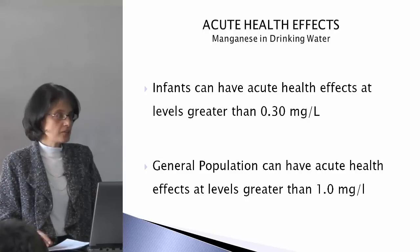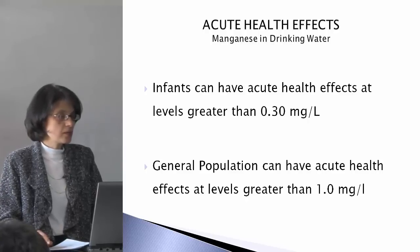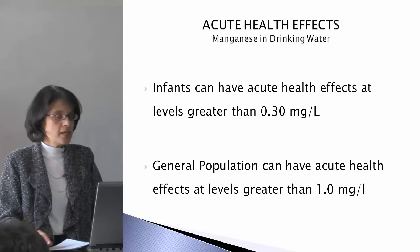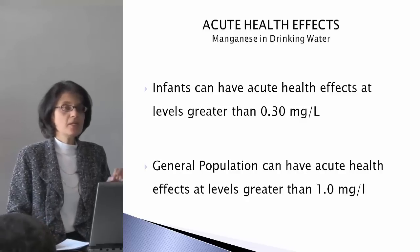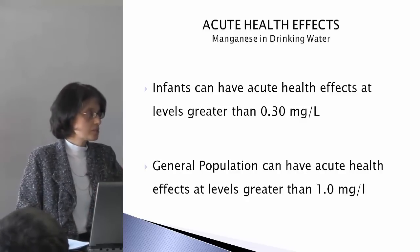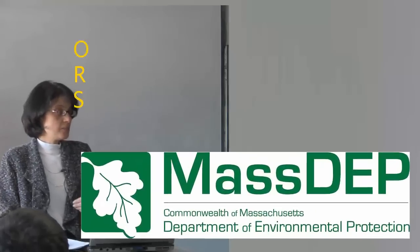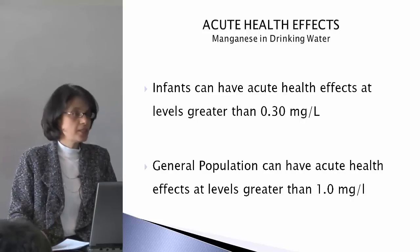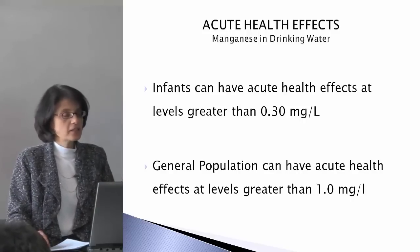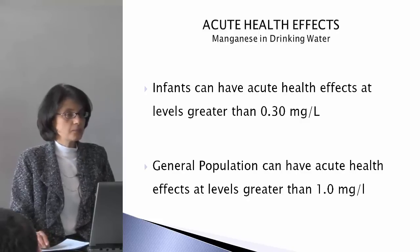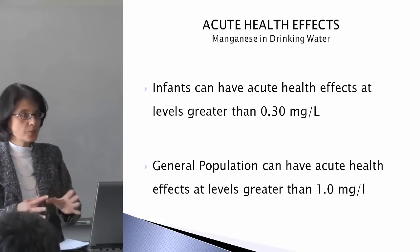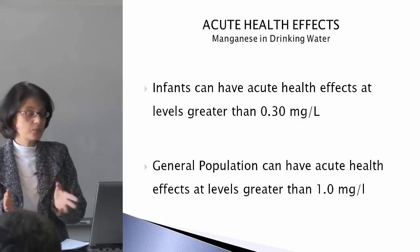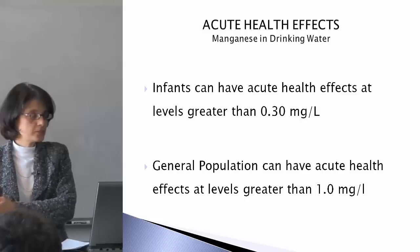There are acute exposure health effects associated with manganese in drinking water. Infants can have acute health effects at levels greater than 0.3 milligrams per liter. For this reason, US EPA issued a health advisory at 0.3. MassDEP with the Office of Research and Standards followed EPA and also set the ORSG at 0.3, and another health advisory at 1.0 milligrams per liter. There are reporting and monitoring requirements if it's greater than 0.3 up to 1.0, and if it's greater than 1.0 we'll talk about that too.